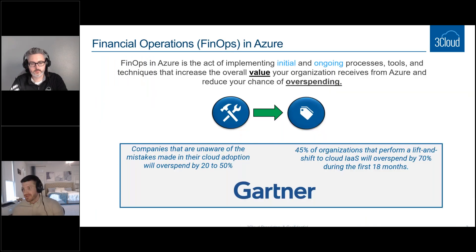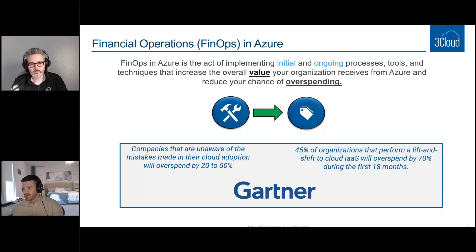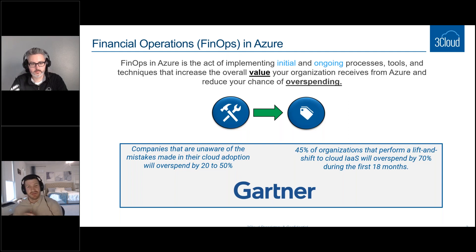FinOps is the act of implementing both initial and ongoing processes — and it's very important that it's both. We talk about processes, tools, and techniques. There are really two key points: financial operations and cost optimization is not just about reducing overspending, it's also about increasing the value you're getting from Azure. If you're getting terrible performance in Azure but saving money, no one will be excited. If you spend $100 extra and double your performance, that's great — that's cost optimization.